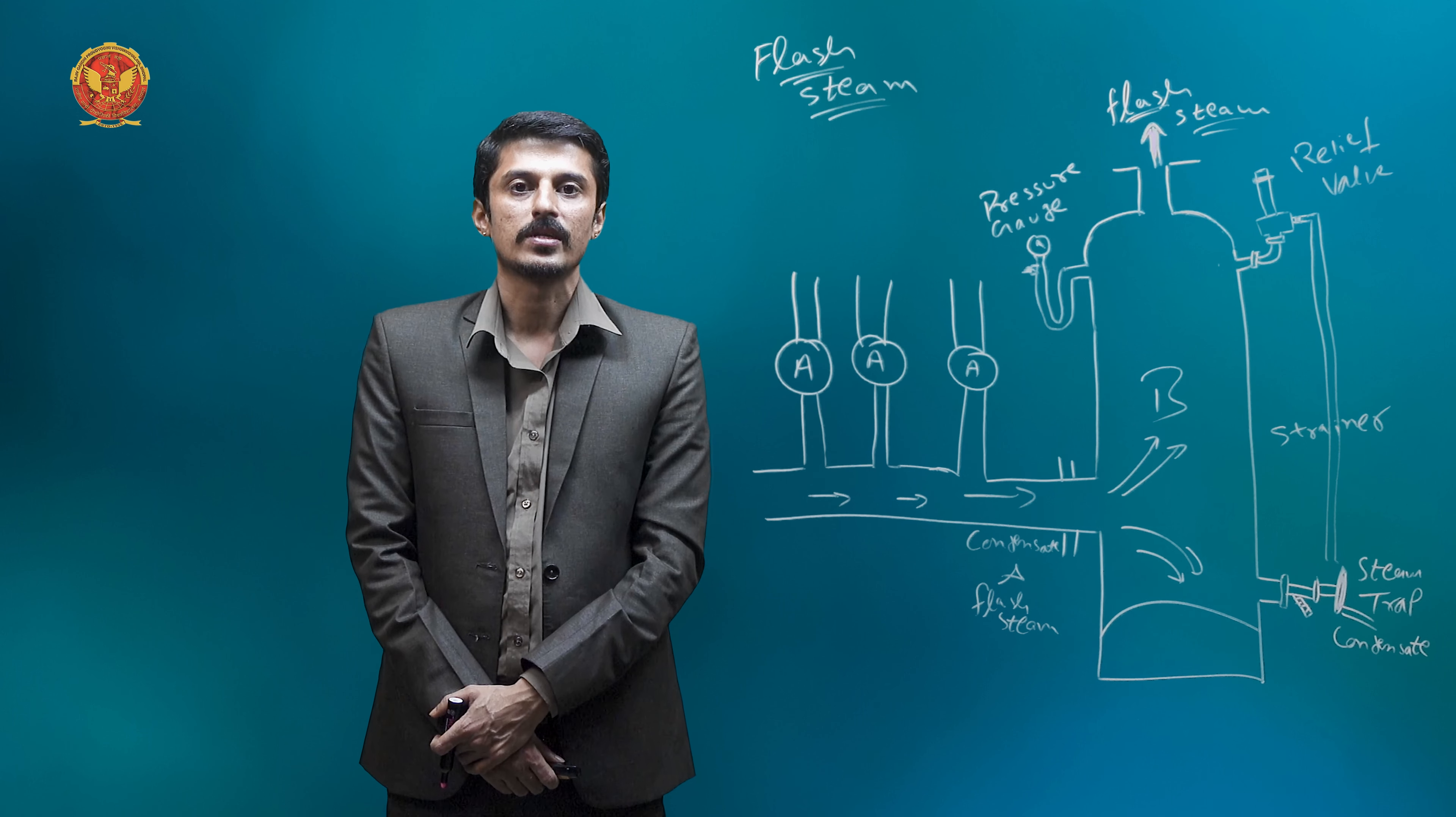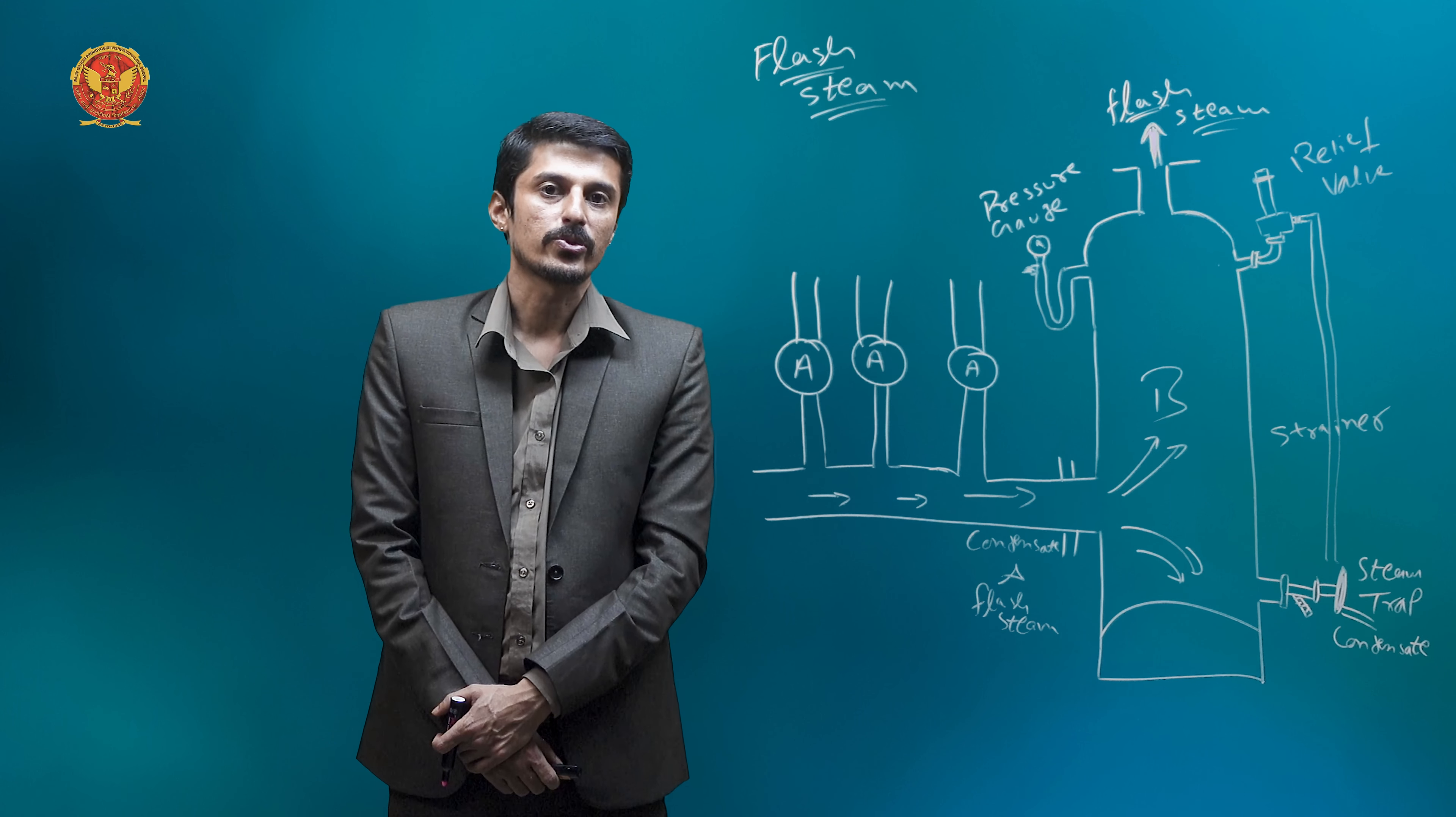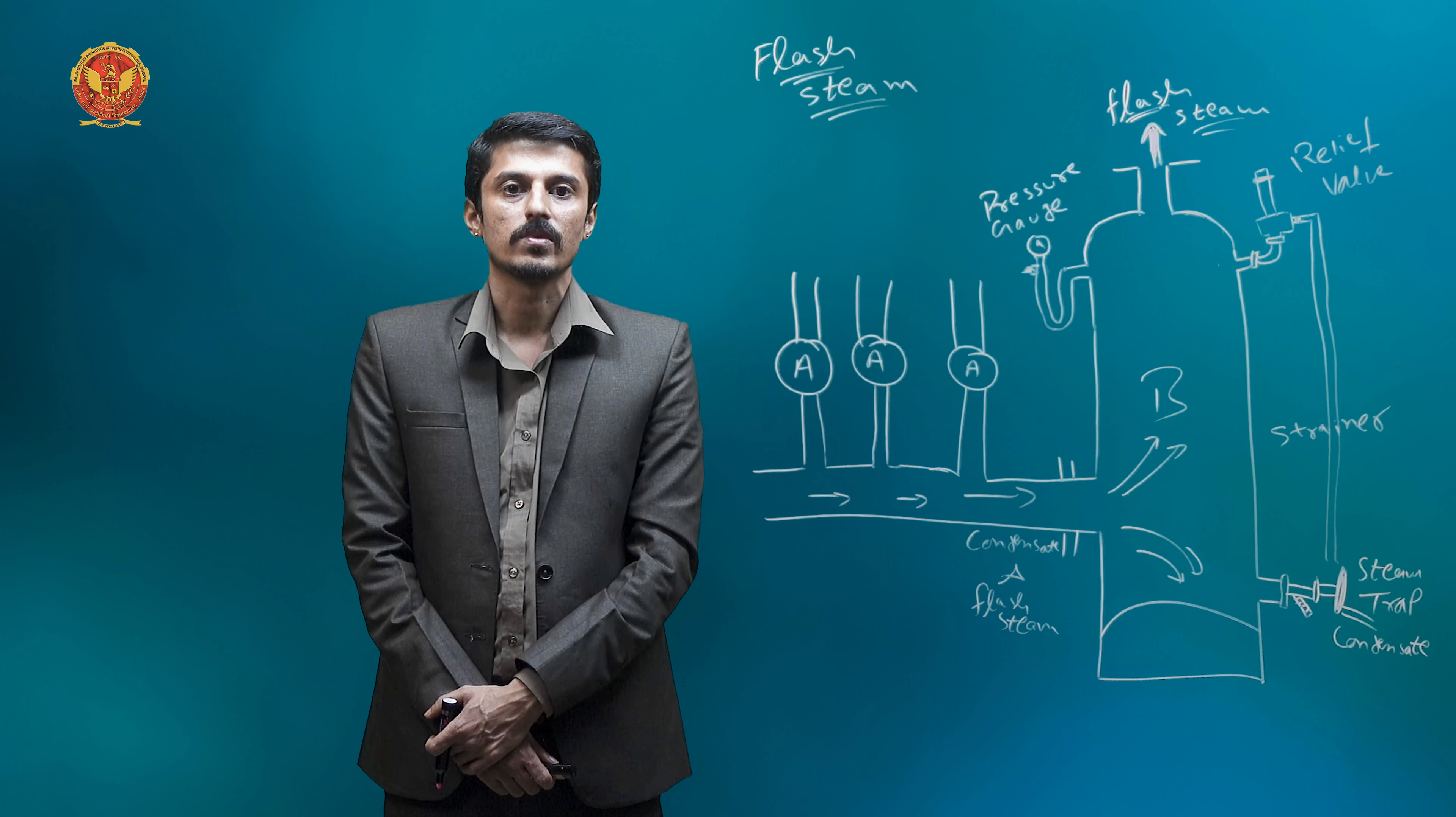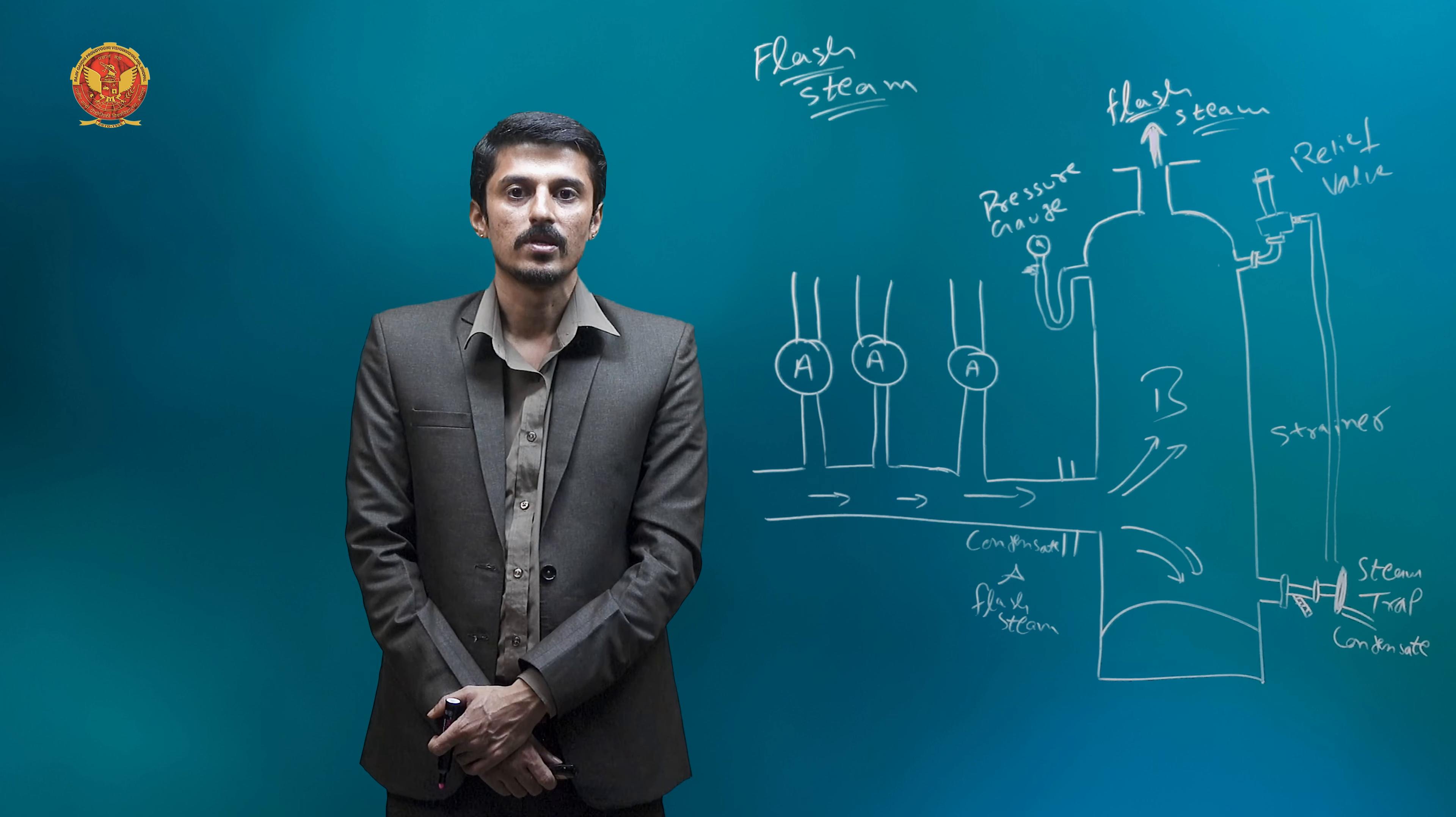So basically, flash steam is produced when high pressure condensate is suddenly released to low pressure. Then we release it to low pressure on heating. So when this process is done, the flash steam will produce. Higher the steam pressure and lower the steam which we transfer, the flash will create.